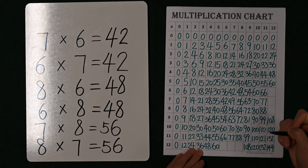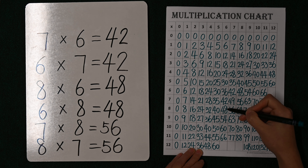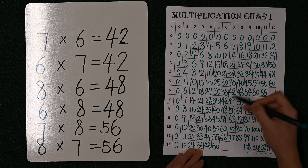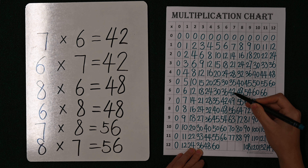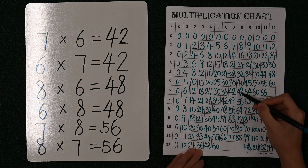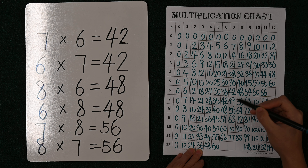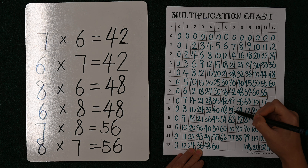So these ones particularly, please just remember to remember. Seven sixes are forty-two. Six sevens are forty-two. Eight sixes are forty-eight. Six eights are forty-eight. Seven eights are fifty-six. And eight sevens are also fifty-six.